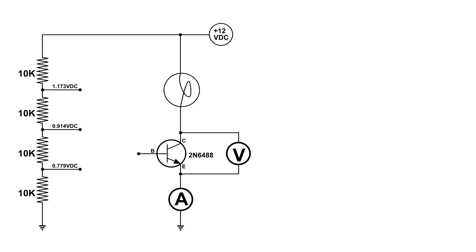When we get those readings from the ammeter and the voltmeter then I'll connect the base to the next bias which is 0.914. And when we have collected that information I'll connect it to the highest bias which is 1.173 volts DC.